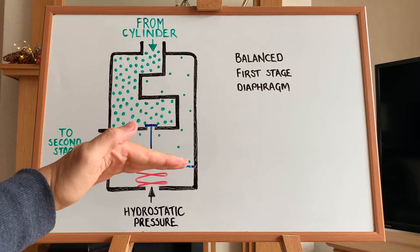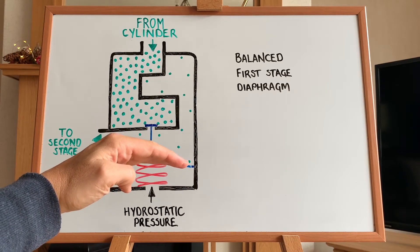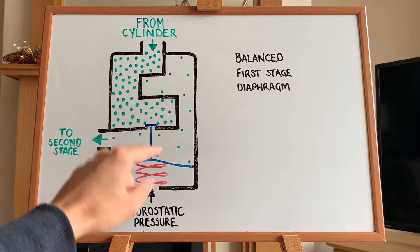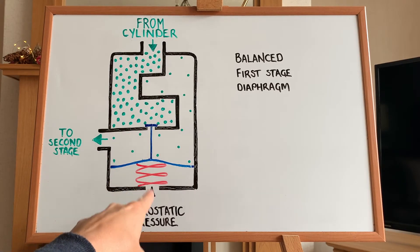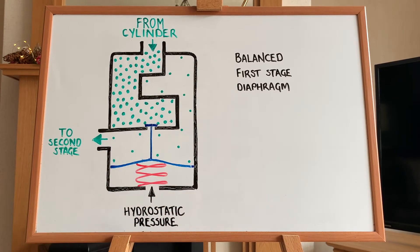So as the pressure drops, this diaphragm right here will start to flex up, which is aided by the bias spring and the hydrostatic pressure. So they aid that diaphragm in flexing up.